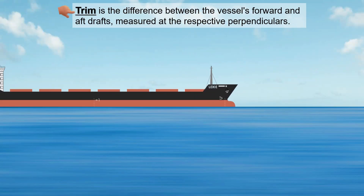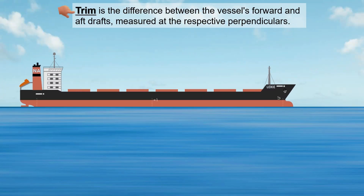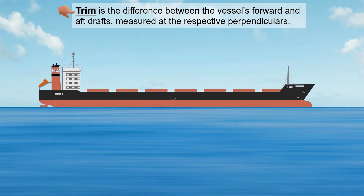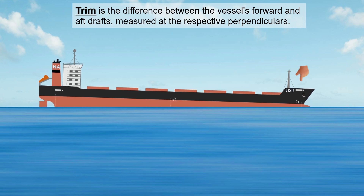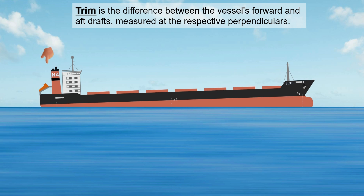Trim is the difference between the vessel's forward and aft drafts, measured at the respective perpendiculars. This difference indicates how much the ship is tilted forward or aft.